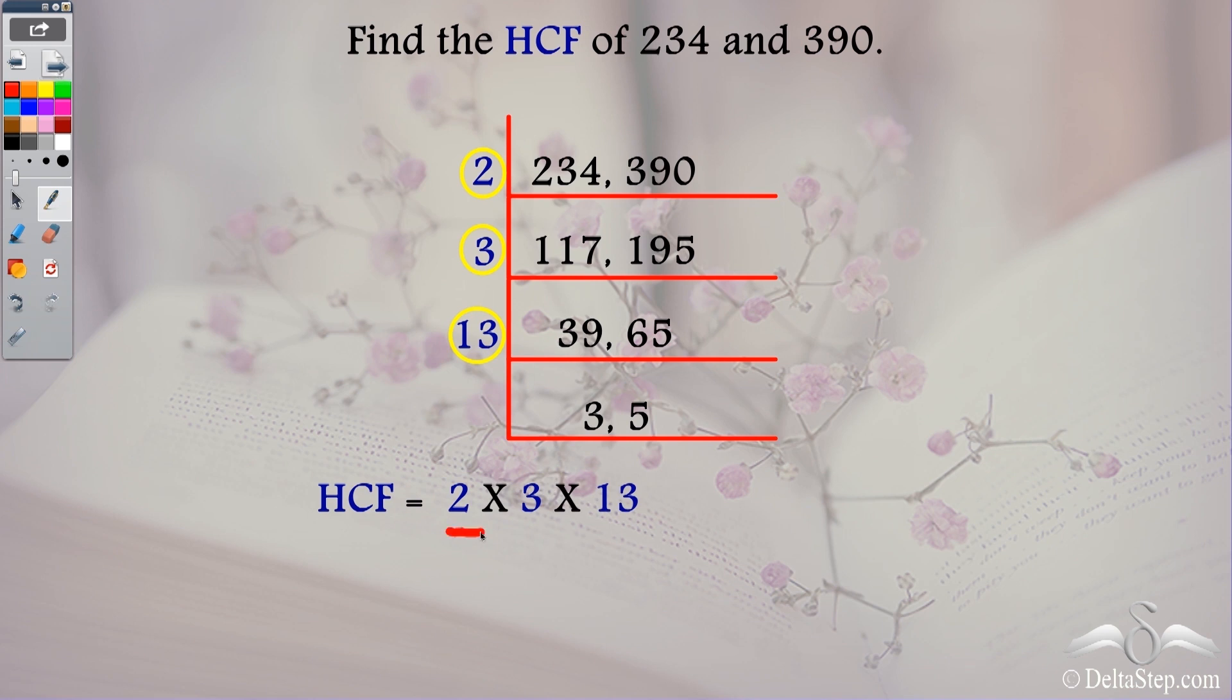So the HCF is 2 into 3 into 13. Now 2 into 3 is 6 and 6 into 13 is 78. So this is the HCF of these two three digit numbers.